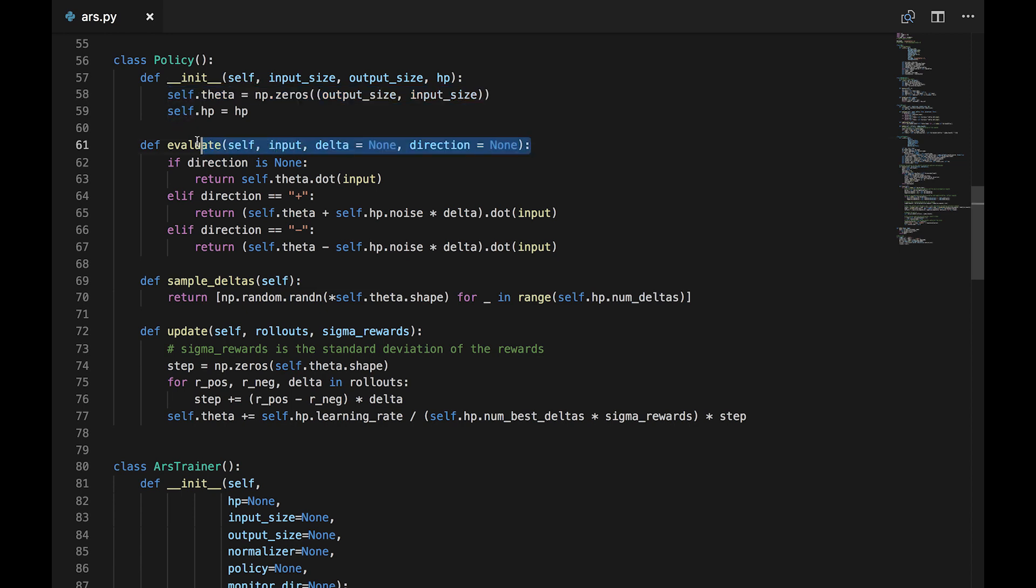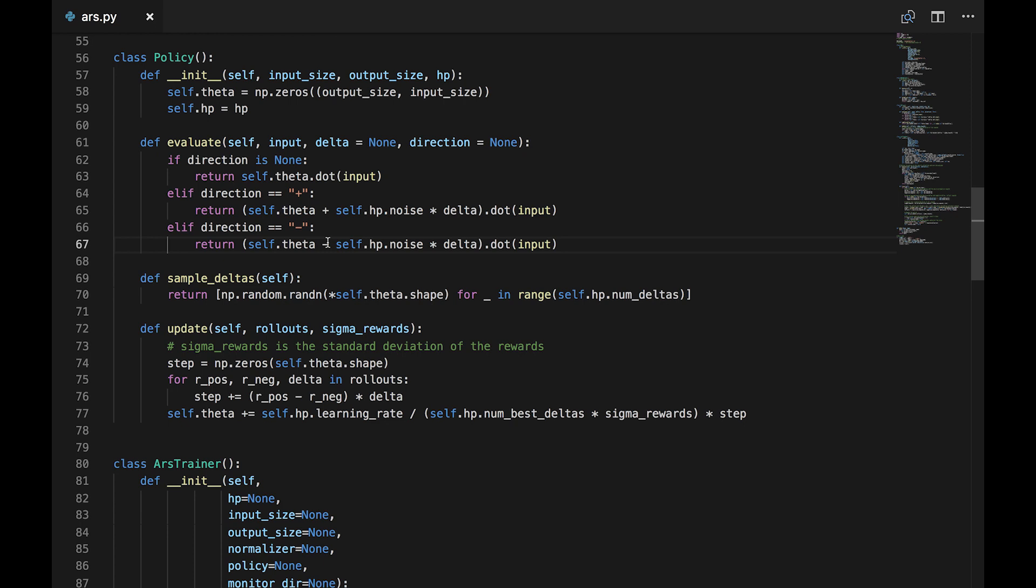If it's called with no parameters, it takes a straight dot product of the existing weights and inputs. If it's called with a noise delta and a direction of either positive or negative, it will apply the noise and then evaluate the action space. The sample deltas function generates an array of random noise matrices, the length being our num deltas parameter. Finally, the update function applies the formula we went over previously to update the weights based on the rollouts.